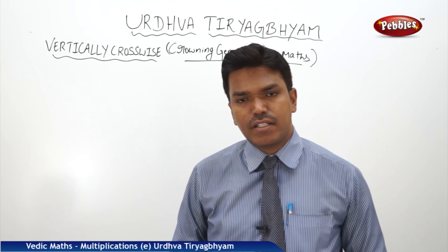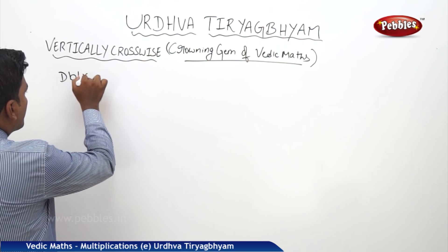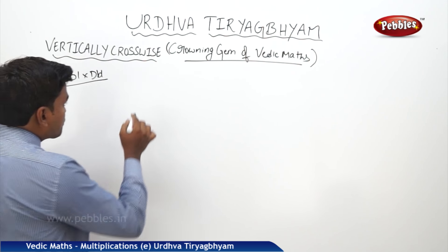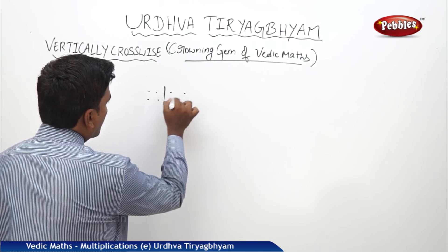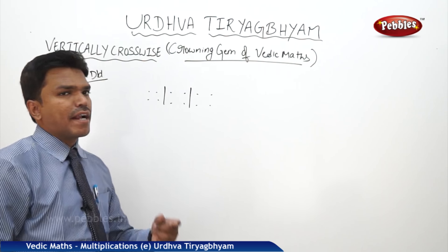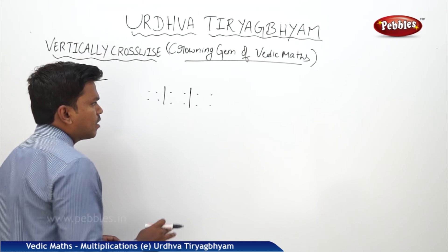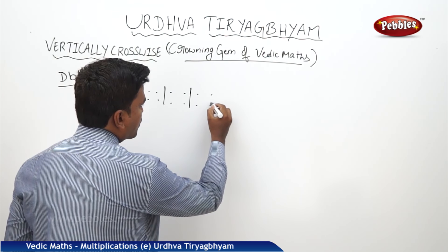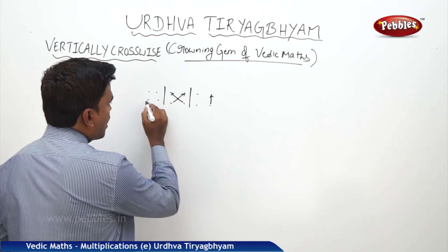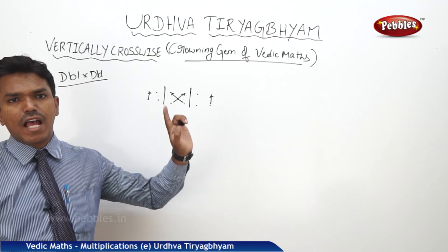Let us see the patterns. We will start with double digit into double digit. Before starting the technique, I want to tell you one thing: in this we have to follow some patterns. If you can understand the patterns and the logic behind them, you can multiply any digit into any digit on your own.